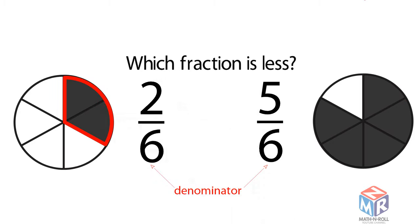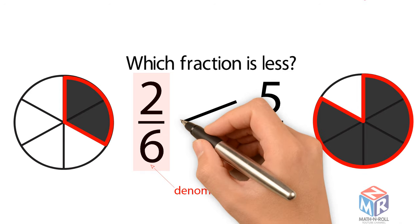When parts are the same size, 2 parts is less than 5 parts. 2 over 6 is less than 5 over 6.